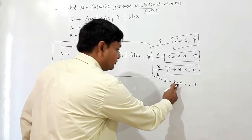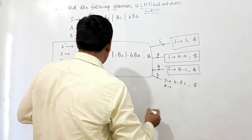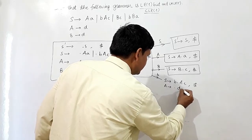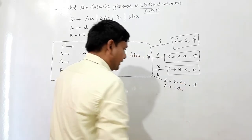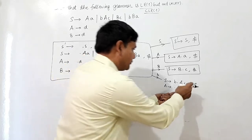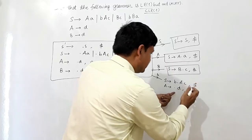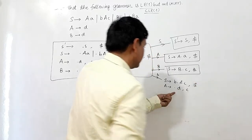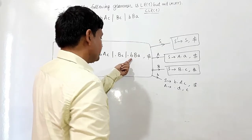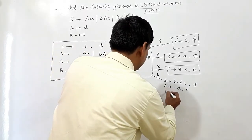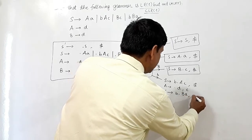This dot is coming before non-terminal A, so I have to write the closure of A, which is dot D. What is remaining after this A is the lookahead. If I read B here, S will give me B dot BA, with lookahead dollar. And this dot is coming before B, so I have to write the closure of B, which is B dot D. What is remaining after this B? That is A, so I am writing A as the lookahead.